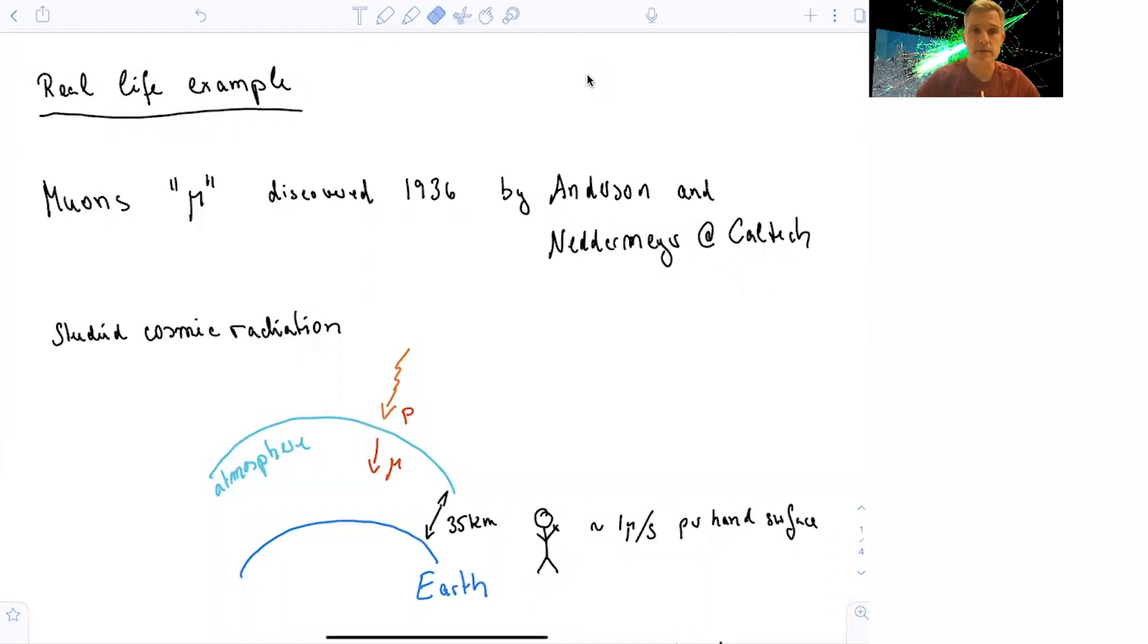Here I would like to discuss a real-life example of this, the muon. The muon is an elementary particle very similar to the electron. Its mass is about 200 times as heavy. The muon was discovered in the 1930s by Anderson and Niedermeyer at Caltech.